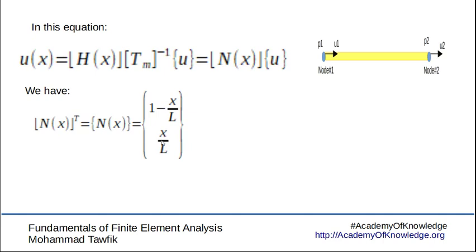These trial functions will look like this: 1 minus x over L and x over L, which are both linear functions. Instead of having a constant in one term and an x in the other term, now we have linear functions in both terms.